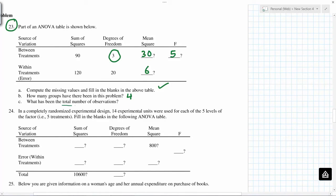What has been the total number of observations? So if you add all the degrees of freedom, you get 23, so this is 1 less than the total number of observations. That means total observations would have been 24.